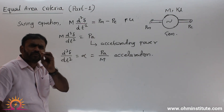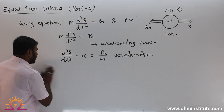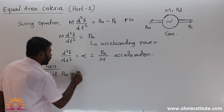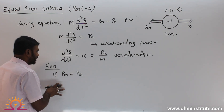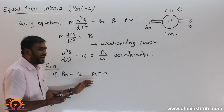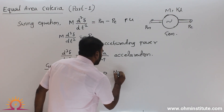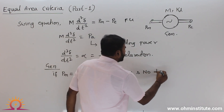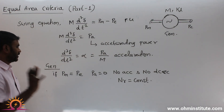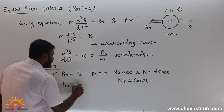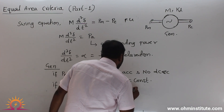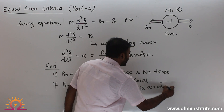For generator action: if mechanical power equals electrical power, accelerating power is zero — the rotor is neither accelerated nor decelerated, and rotor speed is maintained constant. If mechanical power is greater than electrical power, accelerating power is positive and the rotor is accelerated, causing rotor speed to increase.